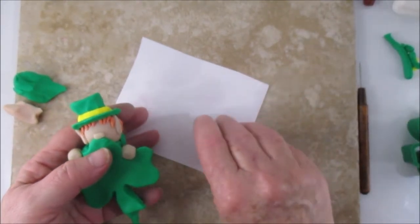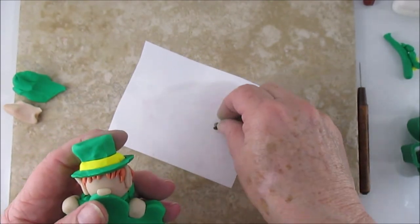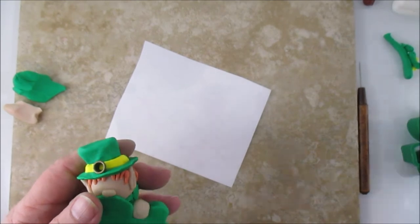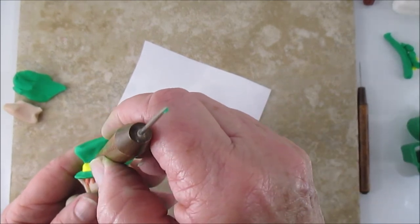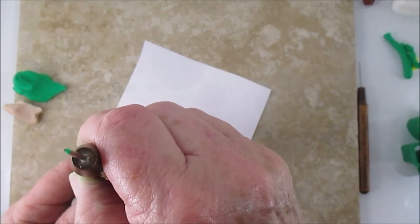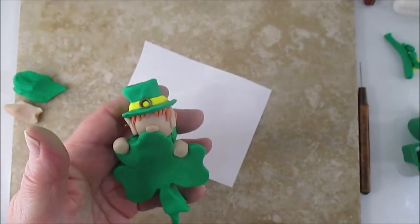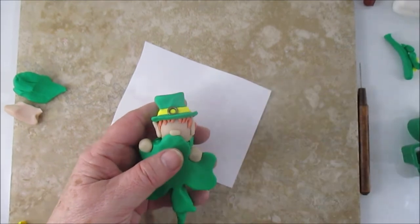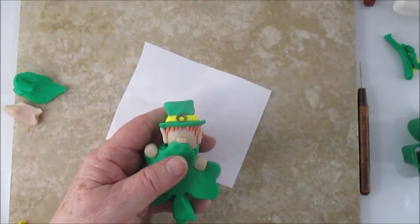Now I'm using an eyelet, which I used to call grommets, but it's an eyelet, and I'm using that on his hat. Now you can also do this with clay if you don't have them. You can make it square or round. You can use black clay or gold clay.